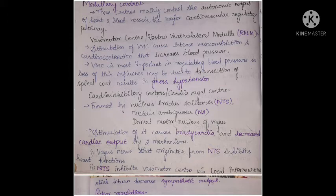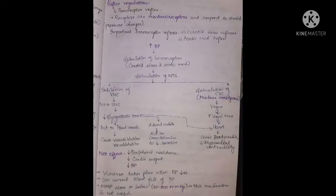In summary, vasomotor center increases BP and cardioinhibitory center decreases BP. Baroreceptor reflex: these receptors are mechanoreceptors that respond to stretch or pressure changes. Important baroreceptor sites are the carotid sinus and aortic arch. An increase in BP stimulates these baroreceptors, which stimulates the nucleus tractus solitarius (NTS), causing inhibition of the vasomotor center and stimulation of the cardiovascular center.